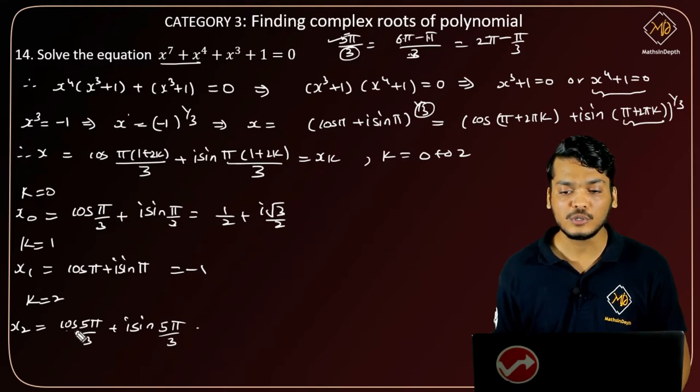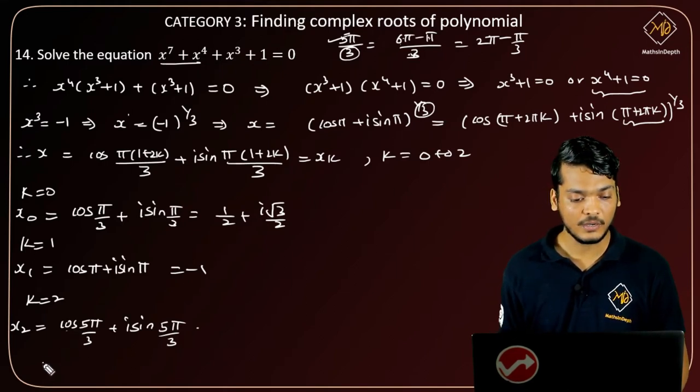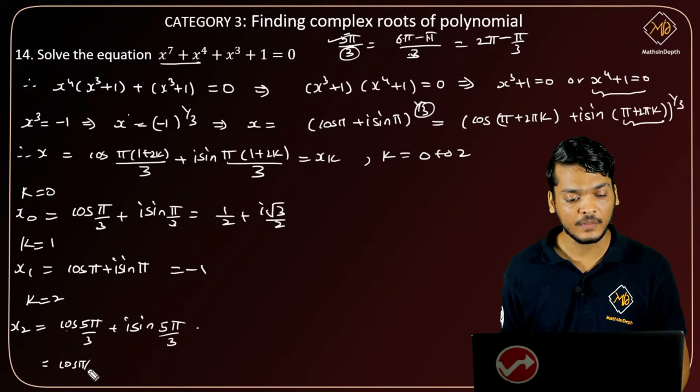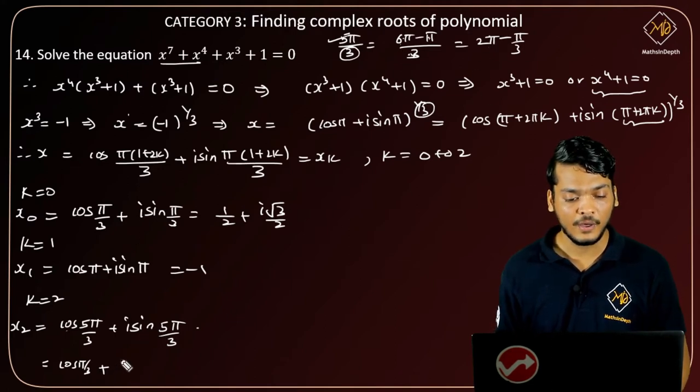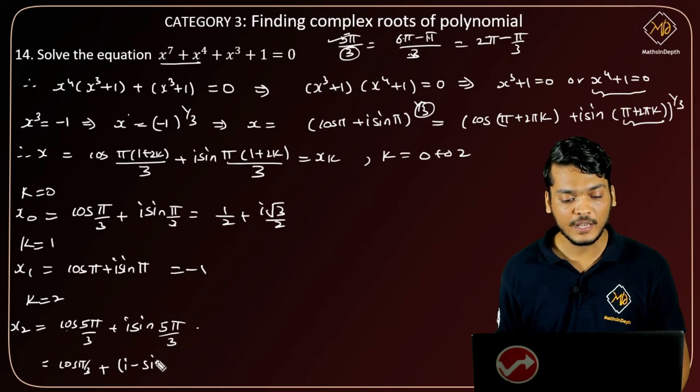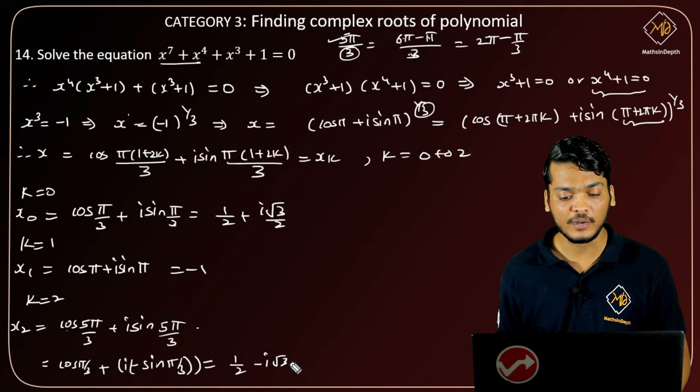So cos of 2 pi minus pi by 3 will be cos pi by 3, and sine of 2 pi minus pi by 3 will be minus sin of pi by 3. This equals to, now cos pi by 3 is half, sin pi by 3 is root 3 by 2, so we get 1 by 2 minus i root 3 by 2.